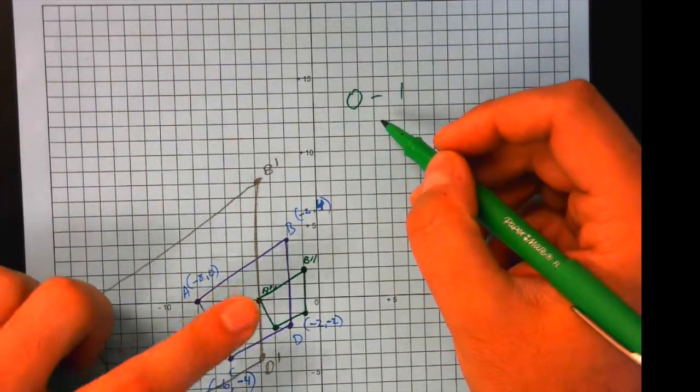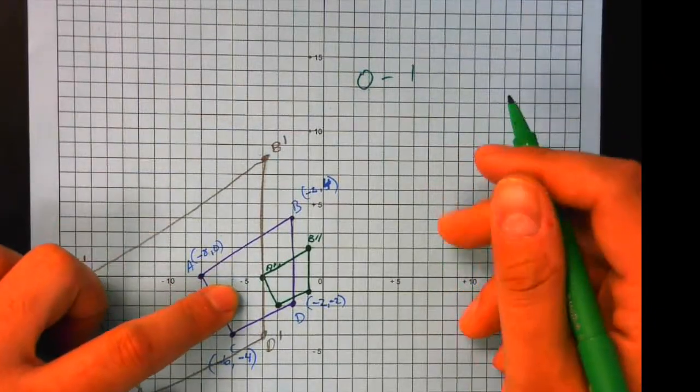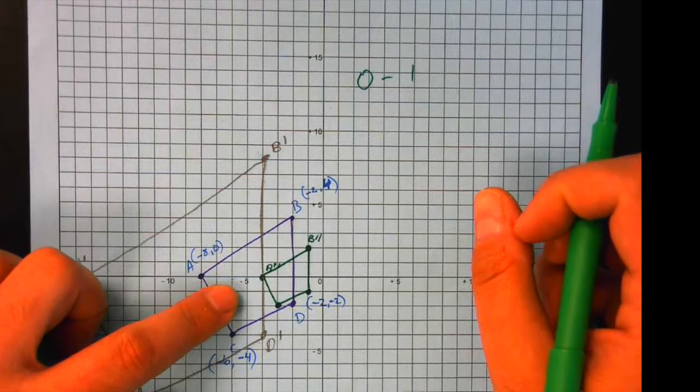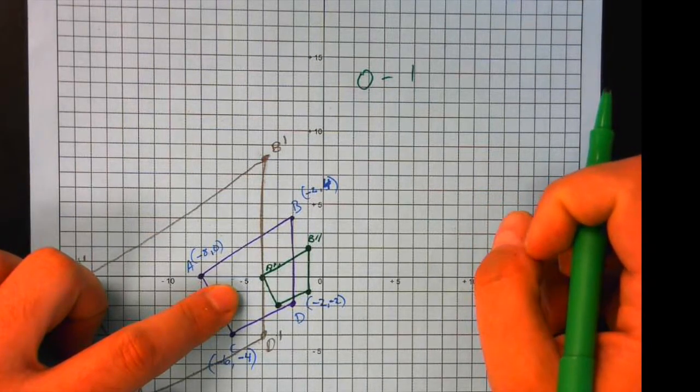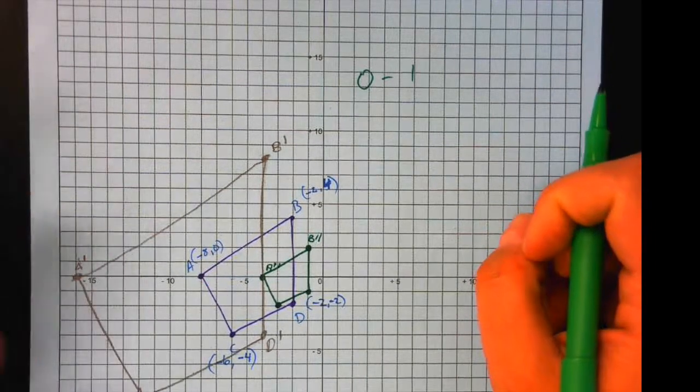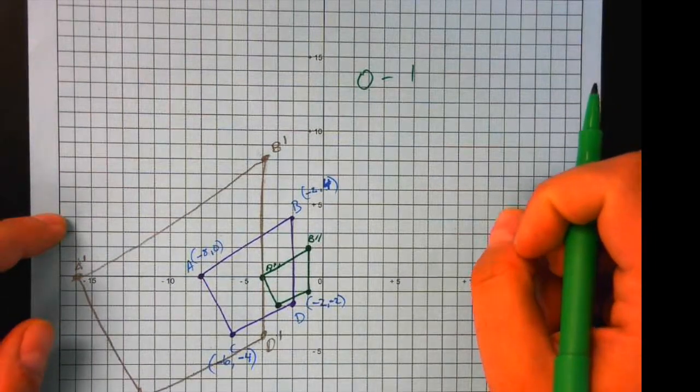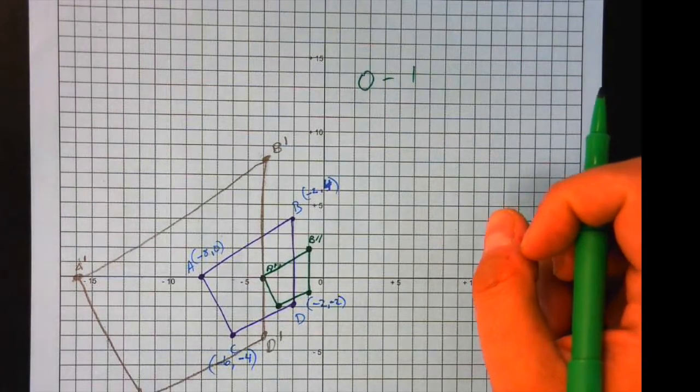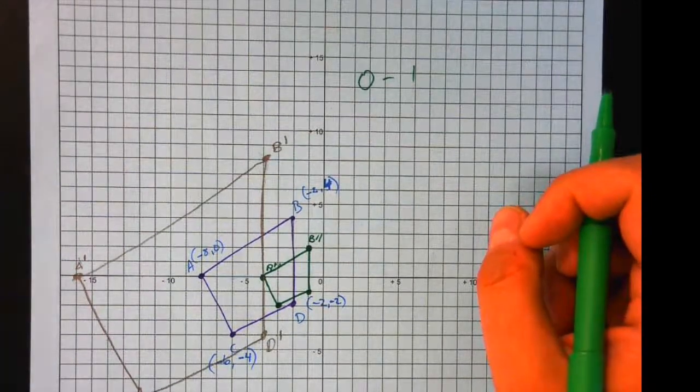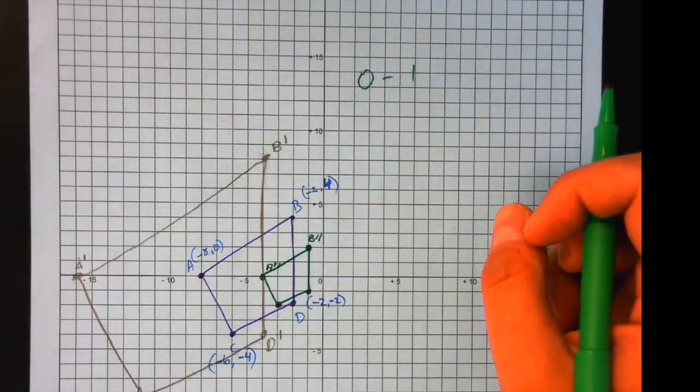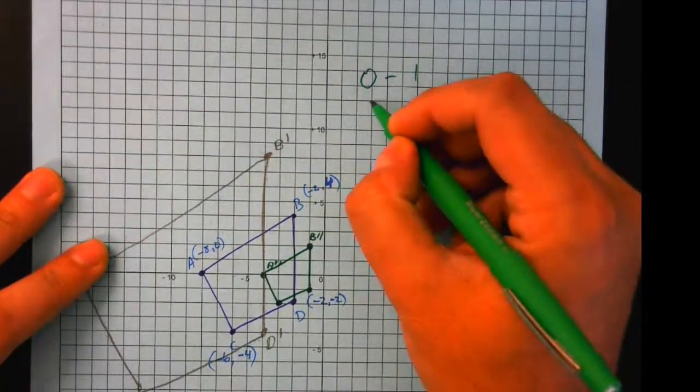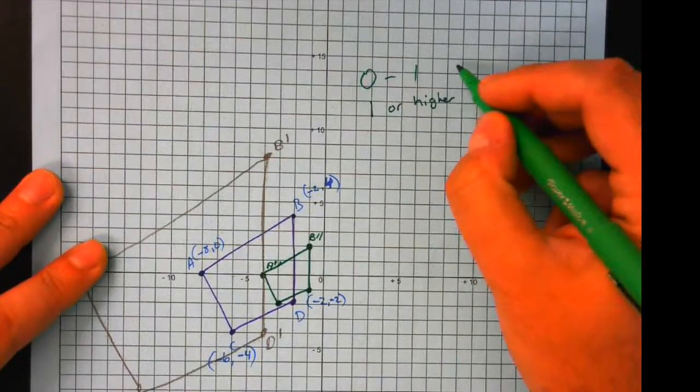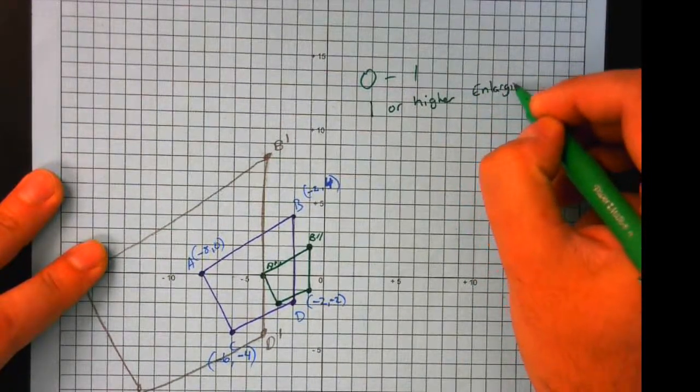If I asked you with the original image, dilate this by a factor of one, what would you do? Allie? Yeah, it would just be the same. So like on the computer, it's like hitting copy, control C. It just makes a copy of what you just did. And it doesn't necessarily move it. Okay. So if it's one or higher, you are enlarging it.